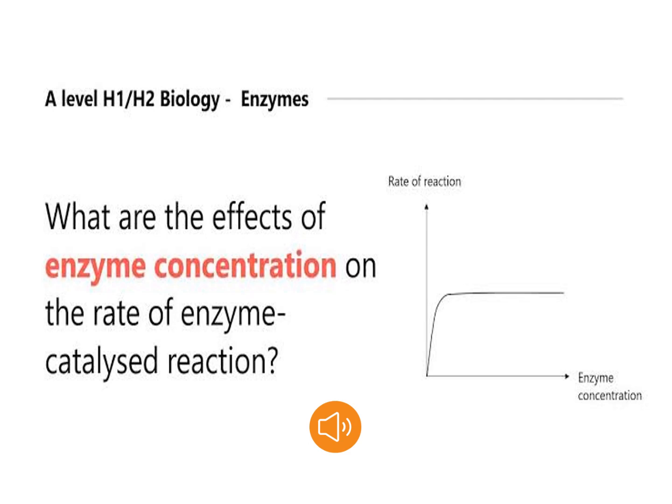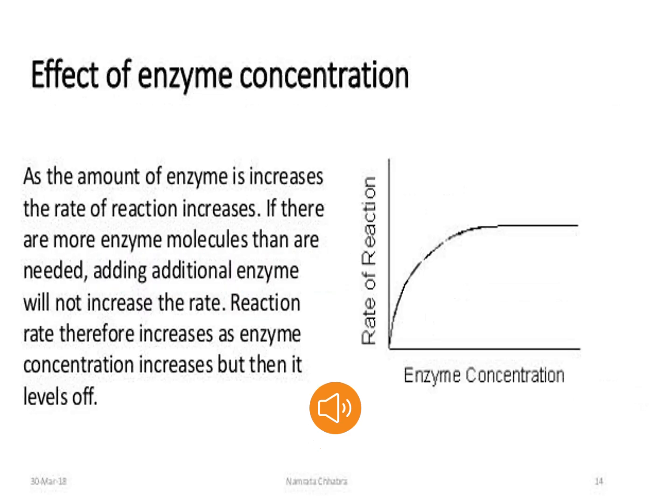I hope all of you have understood the pH factor. Now, moving toward the next factor, that is enzyme concentration. The question is: what are the effects of enzyme concentration on the rate of enzyme-catalyzed reaction? As the amount of enzyme increases, the rate of reaction increases — it is a direct relation. But if there are more enzyme molecules than are needed, adding additional enzyme will not increase the rate.